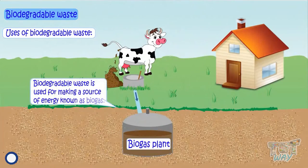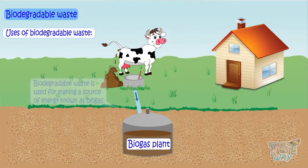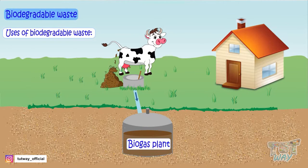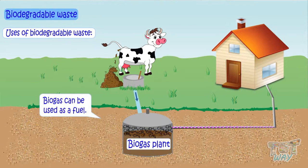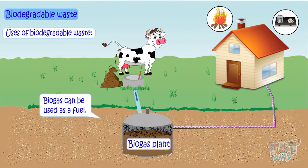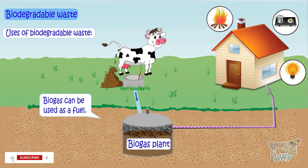Biodegradable waste is also used for making biogas, a source of energy. In the absence of oxygen, biodegradable waste decays and produces a gas called methane, which is used as fuel through various biogas plants. This biogas can be used as a normal fuel for heating, cooking, and even generating electricity.